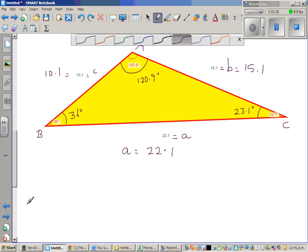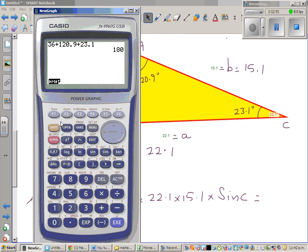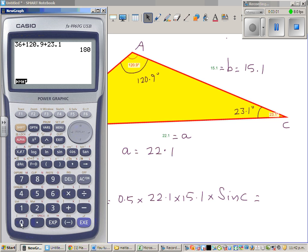Area of this triangle. Area of triangle ABC would be half, which is 0.5 times A times B, which is 22.1 times 15.1 times sin C. Let us use a calculator. The first thing that you should check is whether your degrees is in radians. I have already changed this into degrees. Because we are working in degrees. This is 0.5 times 22.1 times 15.1 times sin C. Sin C is 23.1.